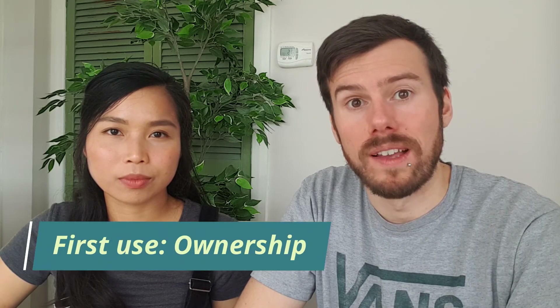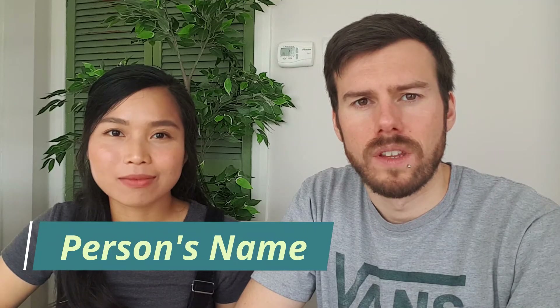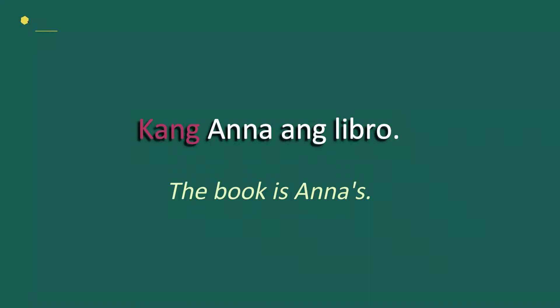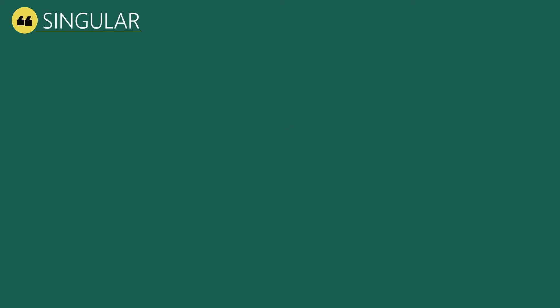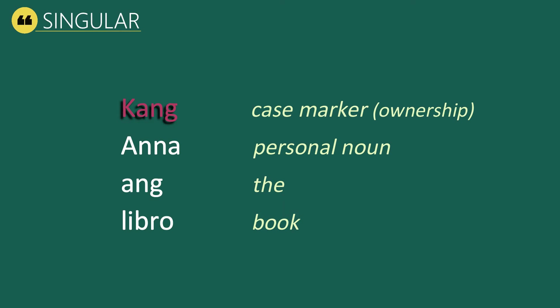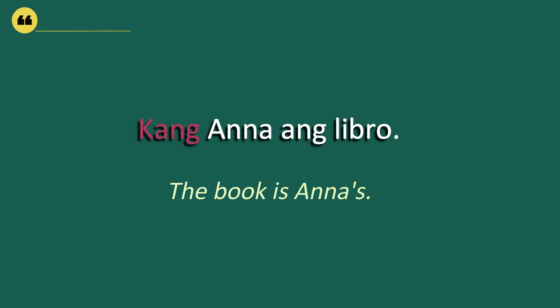Let's take a look at some examples. The first example focuses on ownership using a person's name in singular form. Our example is: Kang Ana ang libro, which means in English 'The book is Anna's.' Kang is our case marker of ownership, Ana is the personal name, ang means 'the,' and libro is the word for book.